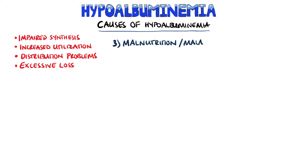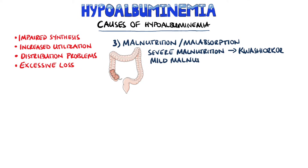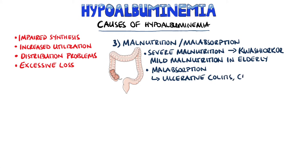Malnutrition or malabsorption are other causes. Severe malnutrition can lead to conditions such as Kwashiorkor, but even mild malnutrition, as is often seen in the elderly, can also cause hypoalbuminemia. Conditions affecting absorption, such as ulcerative colitis, Crohn's disease, and celiac disease, may also end up causing hypoalbuminemia.